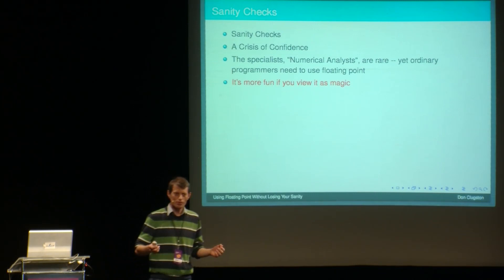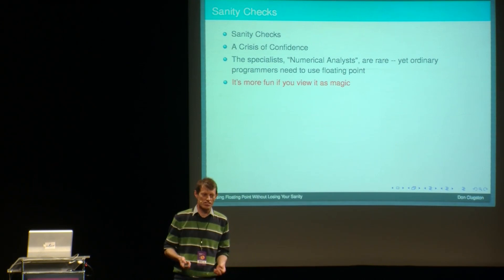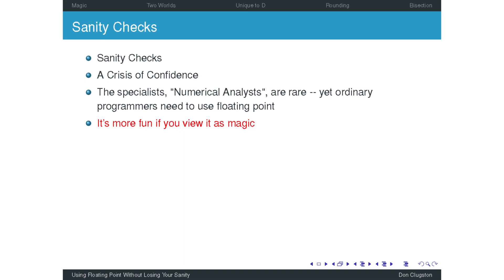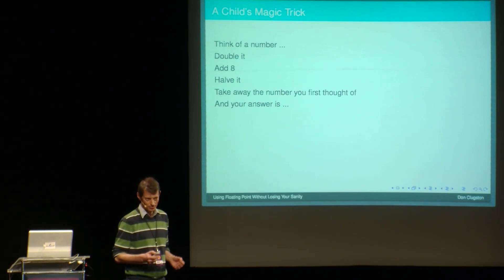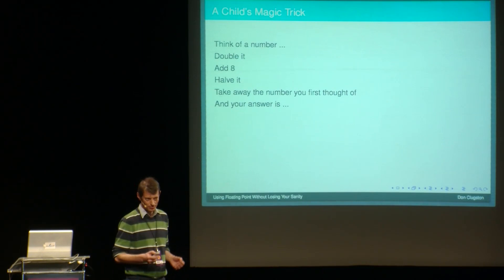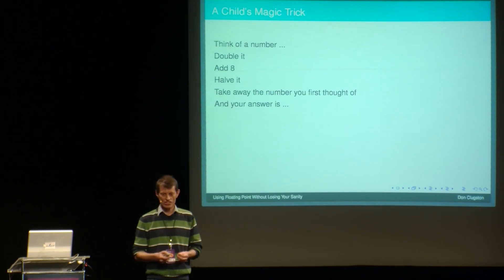So floating point is a lot more fun if you view it as magic. I think this is a place where stage magicians would have once done performances. It's got that kind of feel. So unfortunately I'm not a performer, but I'll start with a child's magic trick. Think of a number. Double it. Add eight. Take away the number, half it. Take away the number you first thought of. And your answer is? Four. Amazing!